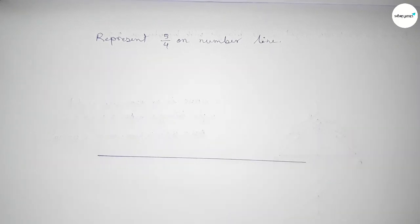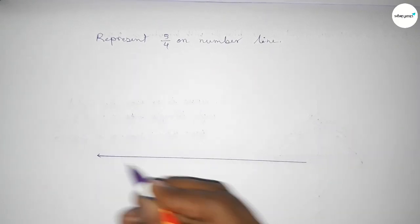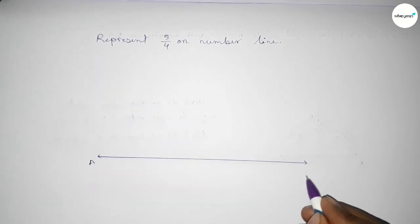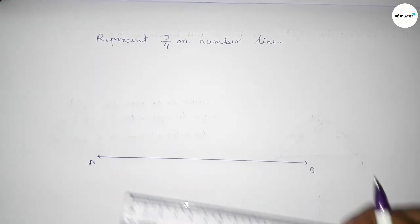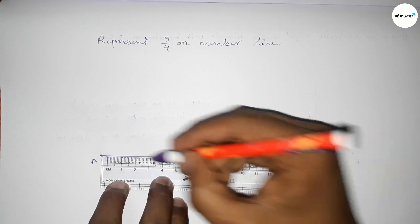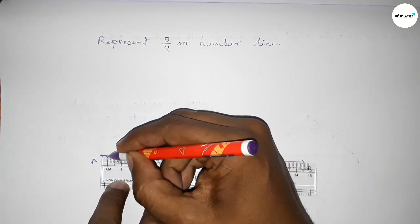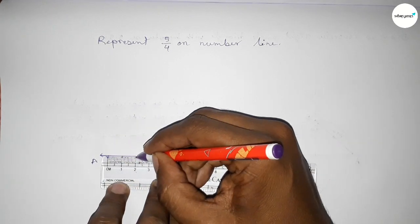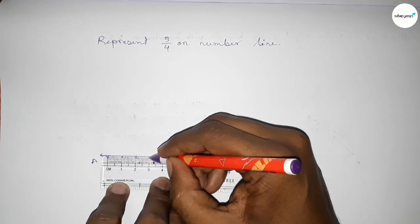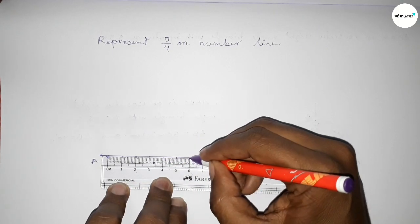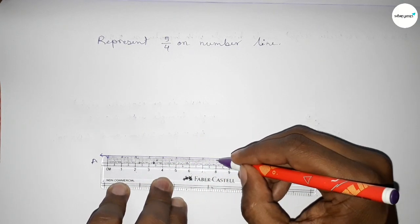First we have to draw a number line — drawing a line, taking arrow marks on both sides, and marking point A and point B. Next we have to mark the numbers on the line using a scale.